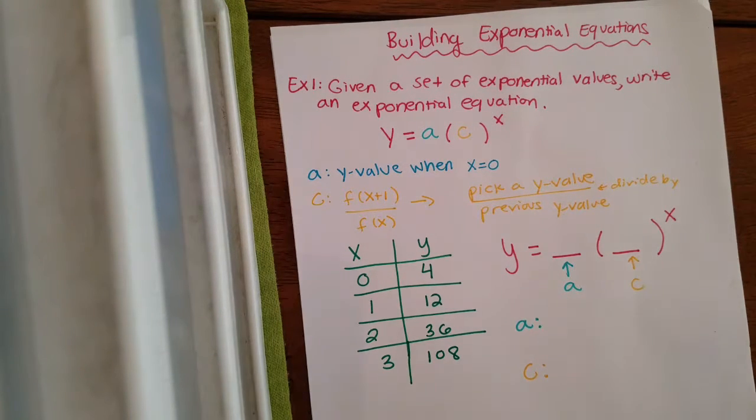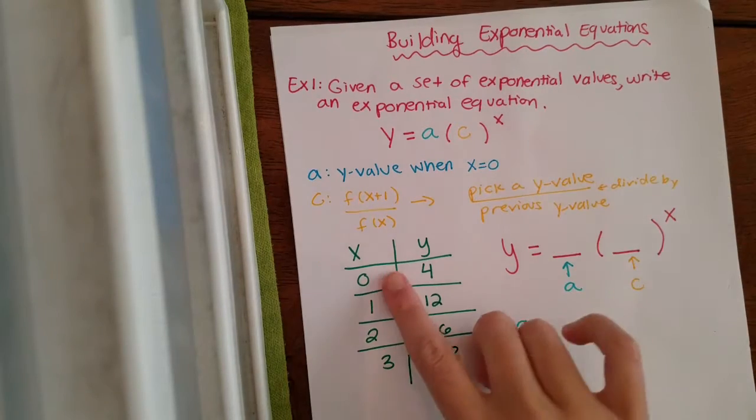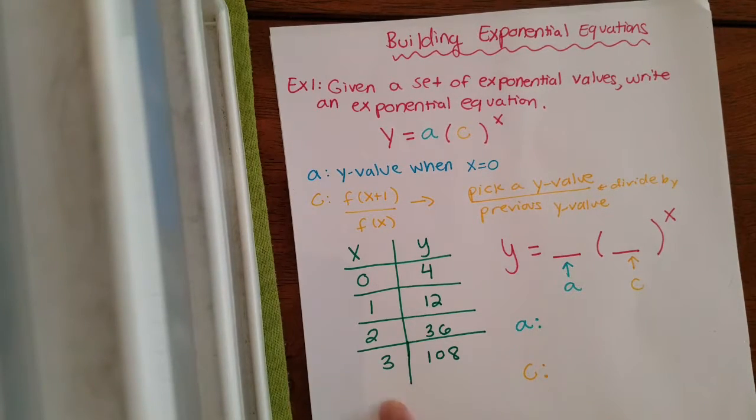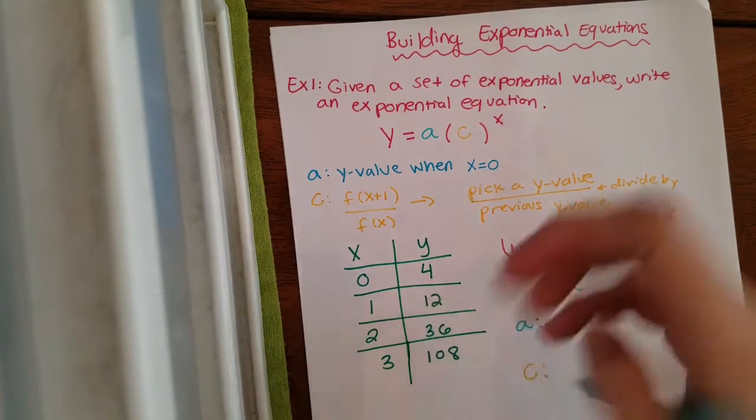So your a value, that is the y when x is zero. So I look over here. The y value when x is zero is going to be four.